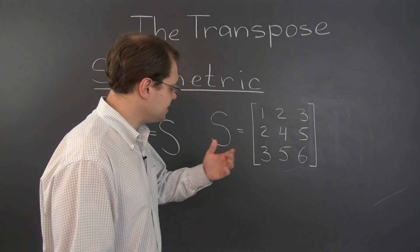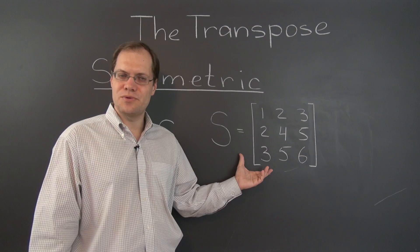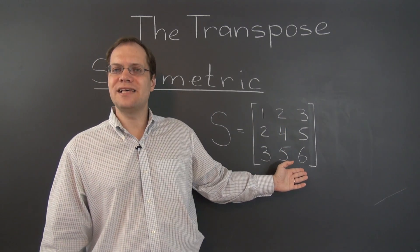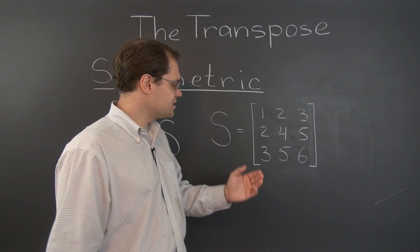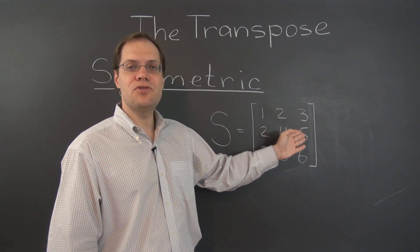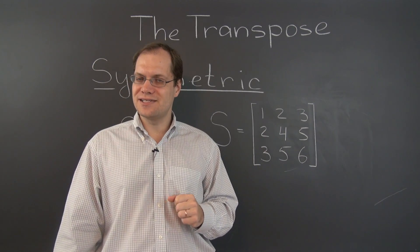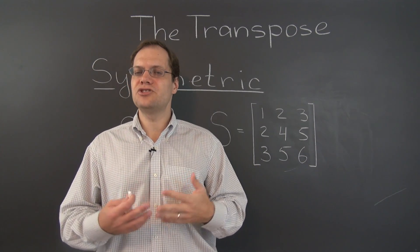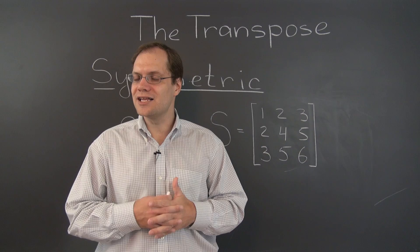For example, you could say that a matrix is symmetric like this one if its rows are the same as its columns. For example, row 3 of this matrix is 3, 5, 6 and column 3 of this matrix is 3, 5, 6 as well. And this relationship holds for all the rows and columns of this matrix.